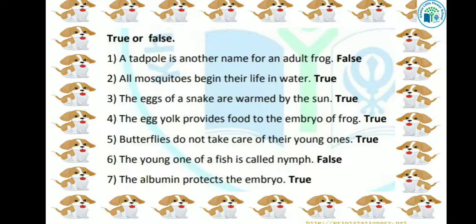The next is: the egg yolk provides food to the embryo of frog. जो egg yolk होता है, तो उसकी मदद से जो embryo होता है frog का, उसको food मिलता है. तो ये sentence भी true है. The next is: butterflies do not take care of their young ones. Butterflies अपने बच्चों का ध्यान नहीं रखती है. ये sentence भी true है.